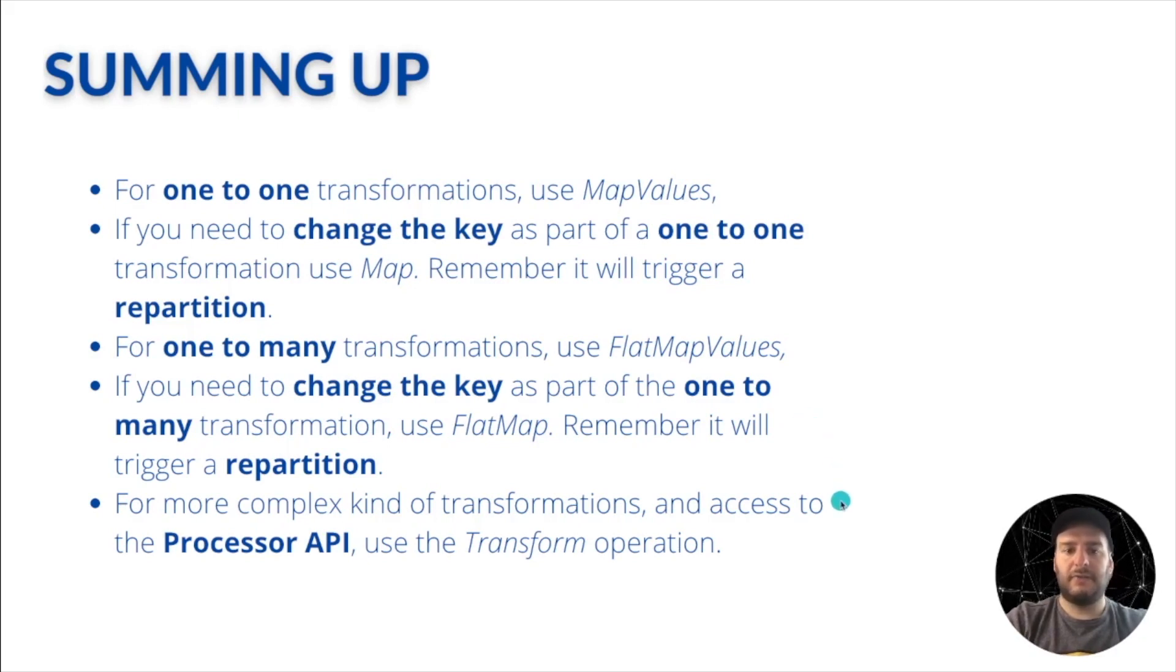Finally, if you want to do a more complex transformation or you need access to the processor API, then you have to use the transform operation. But this you should avoid as much as you can, because it's a complex way of operating Kafka Streams.